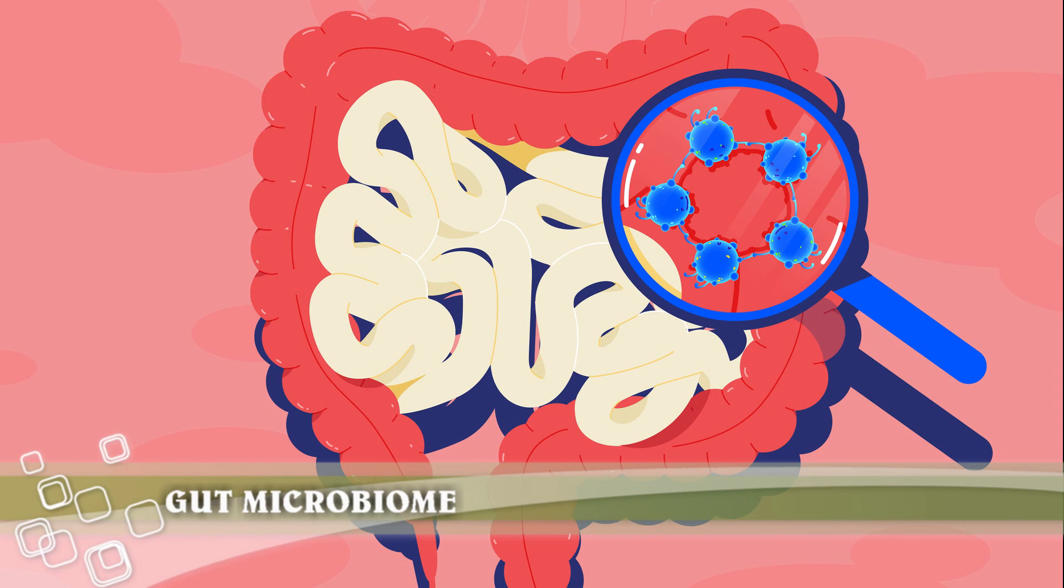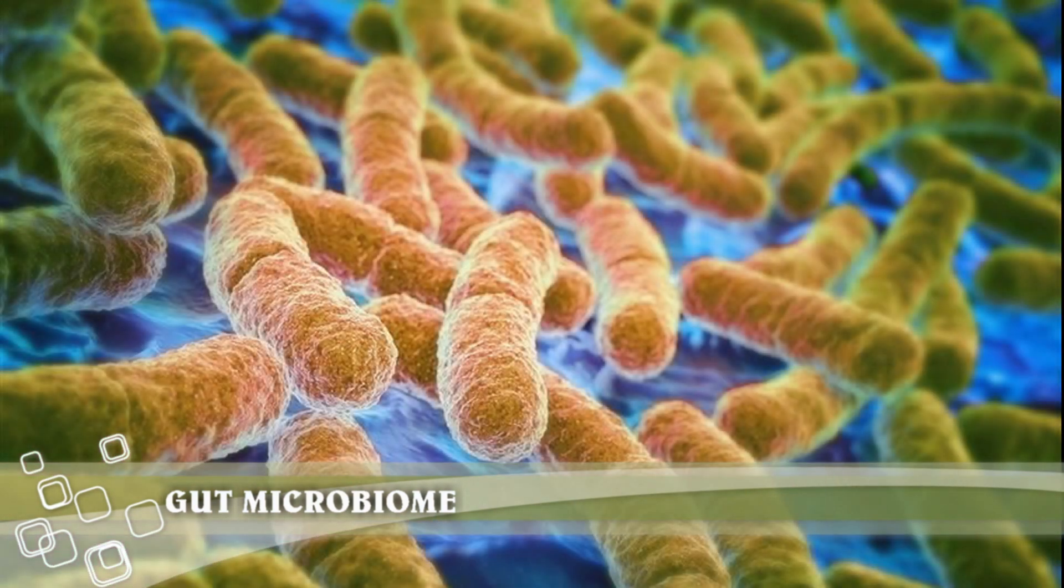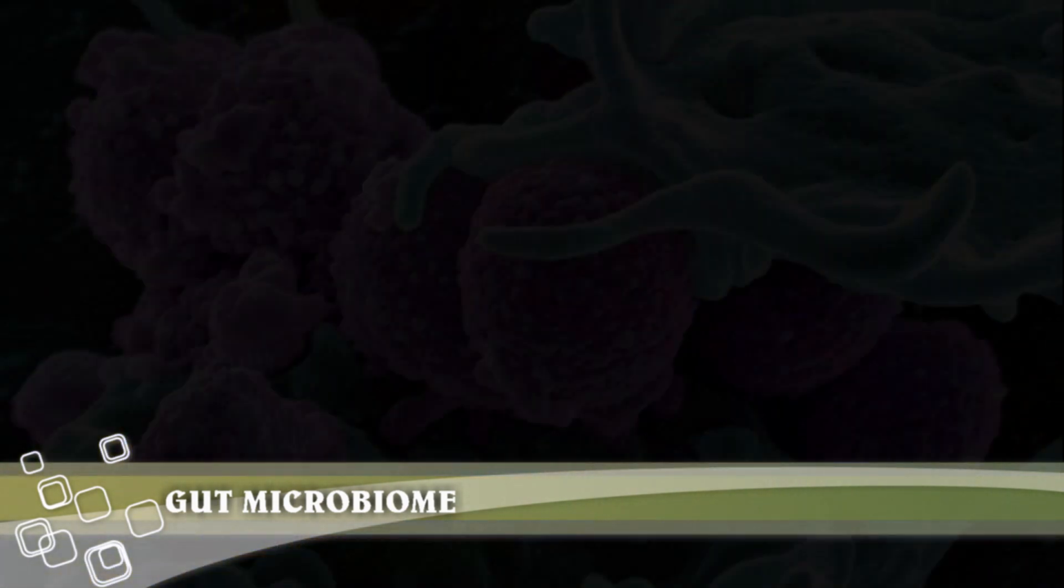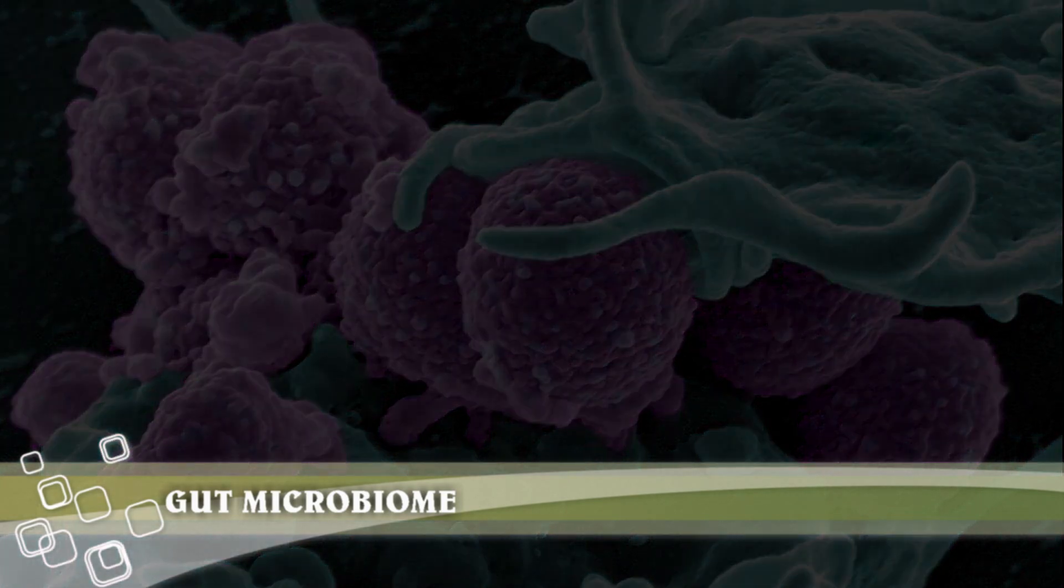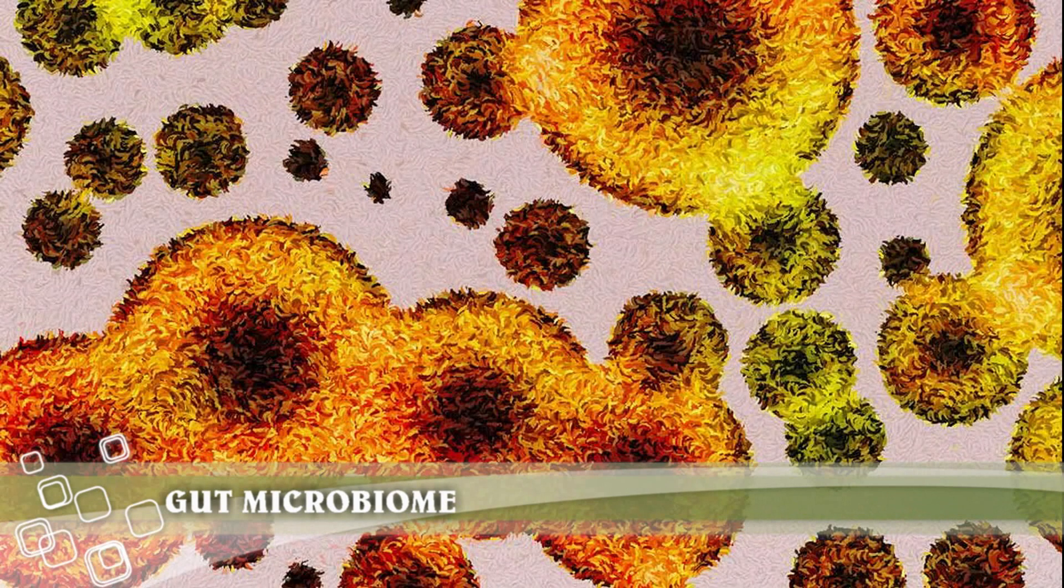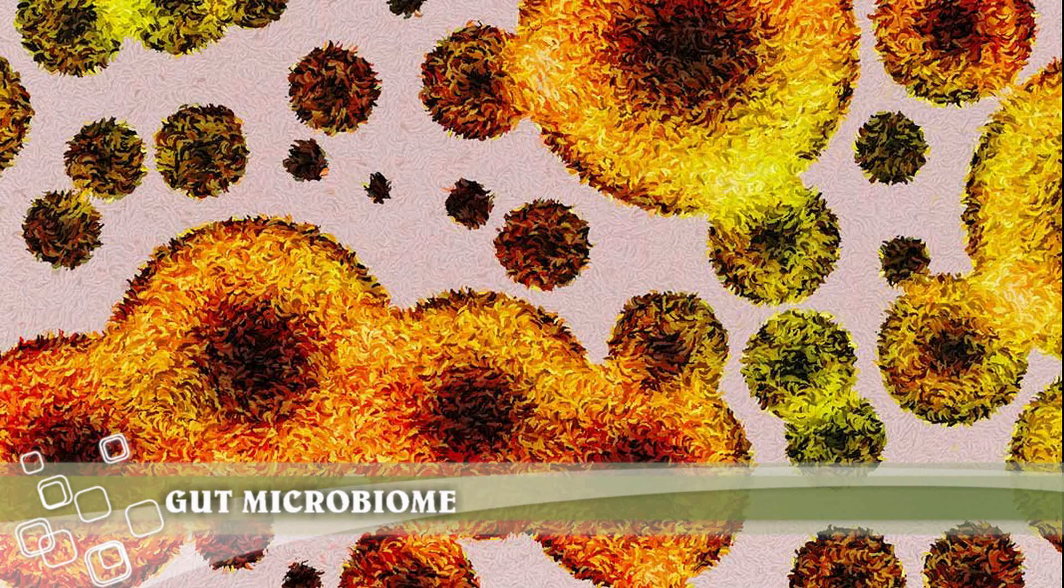Although many different types of microbes live inside you, bacteria are the most studied. In fact, there are more bacterial cells in your body than human cells. There are roughly 40 trillion bacterial cells in your body and only 30 trillion human cells. That means you are more bacteria than human. What's more, there are up to 1,000 species of bacteria in the human gut microbiome, and each of them plays a different role in your body.